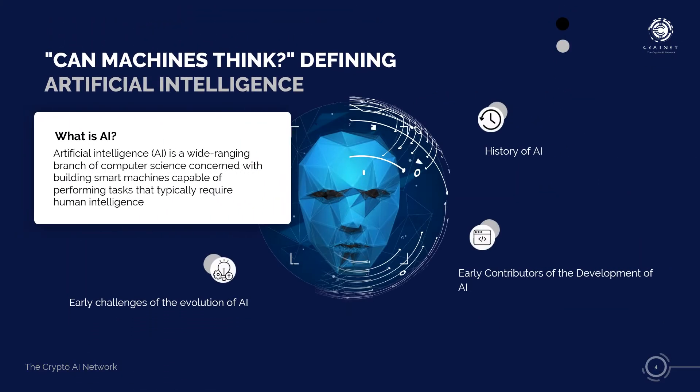He describes a thought experiment that he calls the imitation game, where he puts a machine in one room, a person in another, and a judge in a third separate room. By reviewing the answers to written questions submitted to both subjects, the judge's job is to determine which subject is the machine and which is the human. Turing predicted that a machine might be able to win this imitation game 30% of the time by the year 2000.